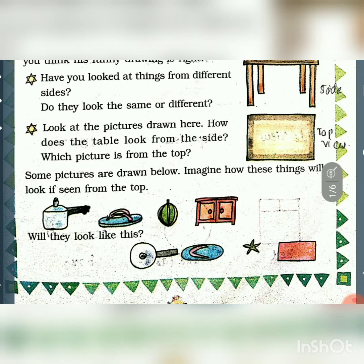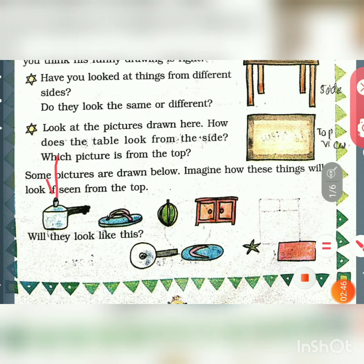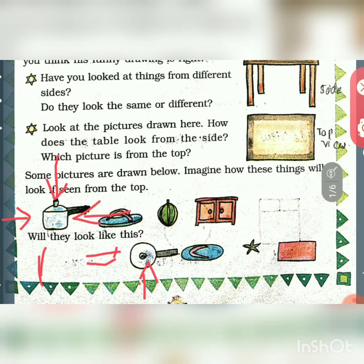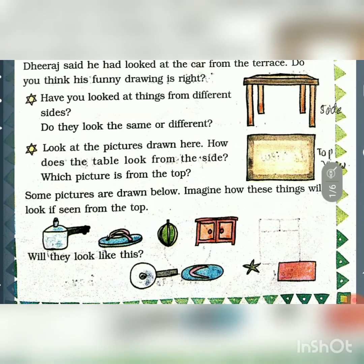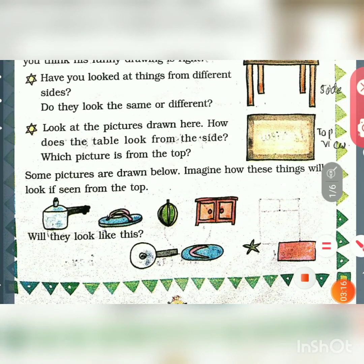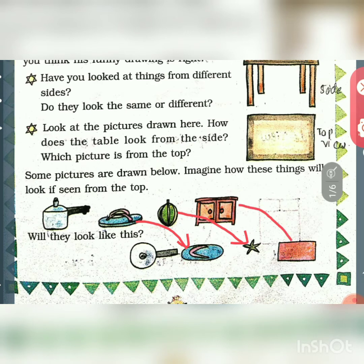Here are some pictures. Imagine how these things will look if seen from the top. When you see from one side, you will see only that part; when you see from another side, you can see the handle alone; when you see from the bottom, you can see a circle. This is the top view of a slipper, this is the top view of a fruit, and this is the top view of the cupboard.